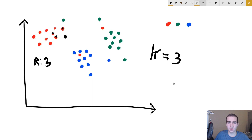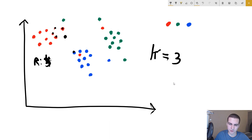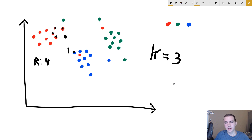If I picked k equals five, we would look for the five closest data points. Let's say we have four red points and one blue point close to the black dot. We look at these five data points and say: red four, blue one. Because red is greater and has the highest occurrence, we classify this point as red — and that is an appropriate classification.